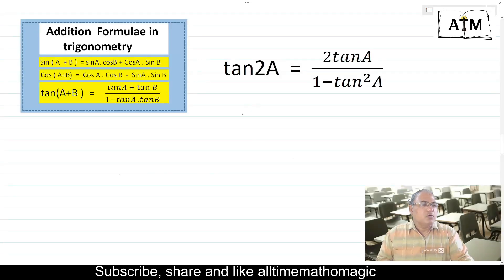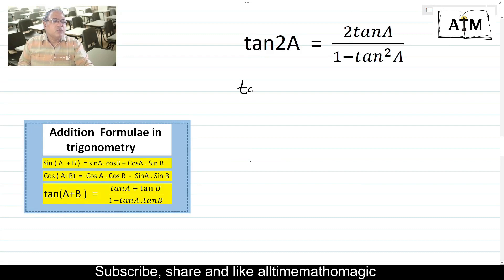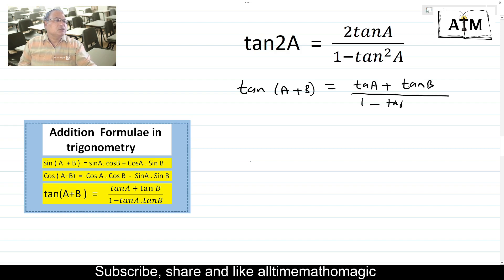Now, to prove tan 2a equals to 2 tan a upon 1 minus tan square a, I am going to use the addition formula in trigonometry, that is tan of a plus b equals to tan a plus tan b upon 1 minus tan a tan b. Now, tan of a plus b equals to tan a plus tan b upon 1 minus tan a tan b.